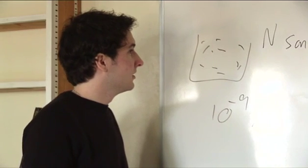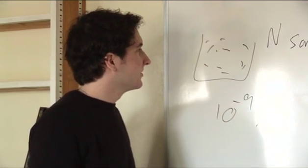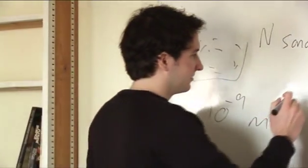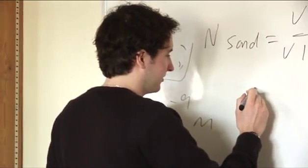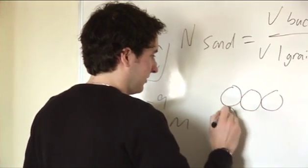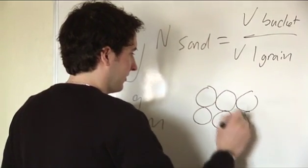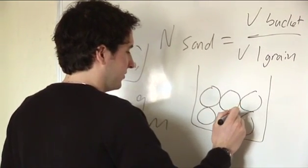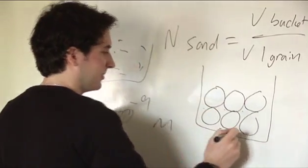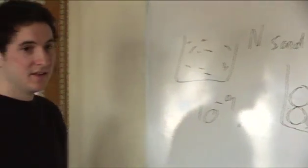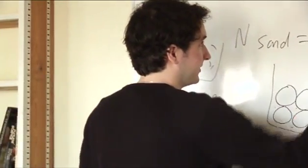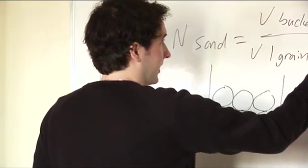Now what assumption are you making when you write that down about the way the sand particles are contained in the bucket? Oh, you're assuming that there's no air in the bucket — that the sand takes up the whole of the space of the bucket. That's right. So you'd have to factor in air. If you took the sand to be roughly spherical, you could work out an estimate for how much air you've got in the bucket, and then factor that out.